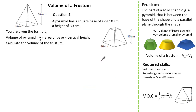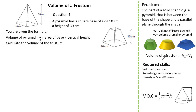Now let's look at our last exam question. Here the question gives us a pyramid with a square base of 10 cm and a height of 30 cm. We are given the formula to find the volume of a pyramid as one-third times the area of the base times the vertical height. We are asked to find the volume of this frustum. We know to work out the volume of any frustum it's the volume of the larger pyramid subtract the volume of the smaller pyramid — and this applies to any frustum, not just cones.